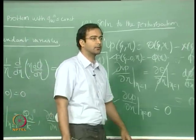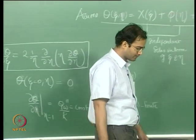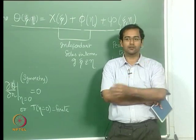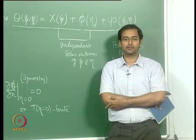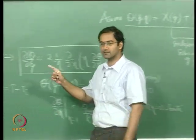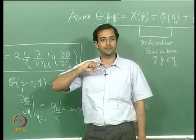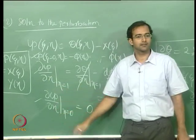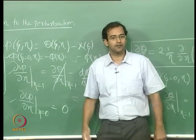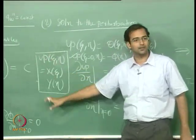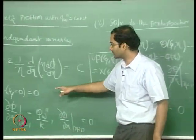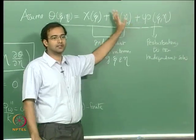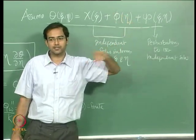The eigenvalue problem arising here is a Bessel equation, for which we already know the solutions. The key difference from the constant wall temperature case is that there the temperature was zero at r = R₀, whereas here both boundary conditions in η are of the gradient (Neumann) type — both homogeneous. The solution for X and φ are straightforward ODEs to integrate. Finally, all three solutions are superposed to get the complete solution for θ.